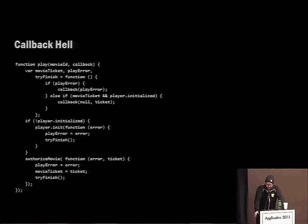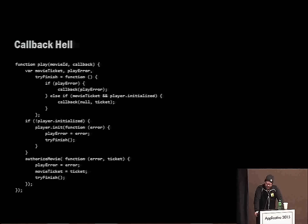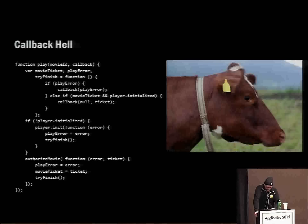Callback hell is a very real thing. Since JavaScript is single-threaded and you can't block for any particular I/O reason, it becomes very hard to reason about your apps. When you're going to initialize a movie, then initialize your player, then get your credentials, then call authorization to get your ticket — all of those things just start nesting and walking off the screen. What you end up with is something like a cow's head in terms of the look and feel of the code, and the logic becomes so hidden that you actually lose what you're trying to do.